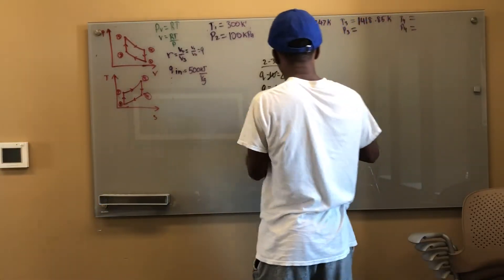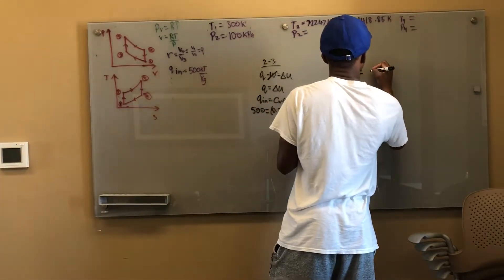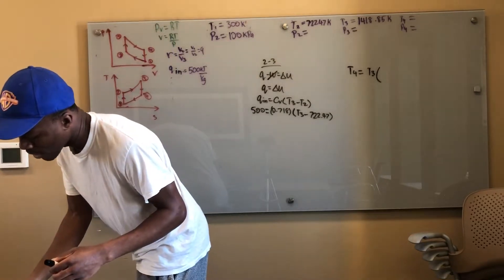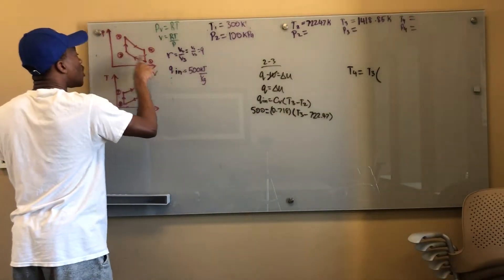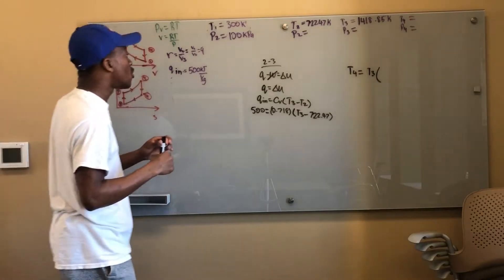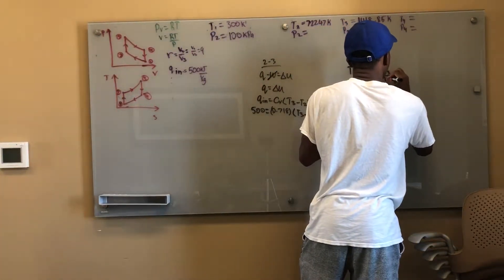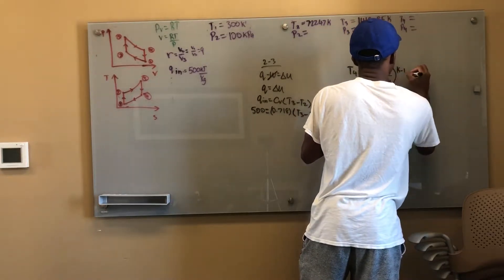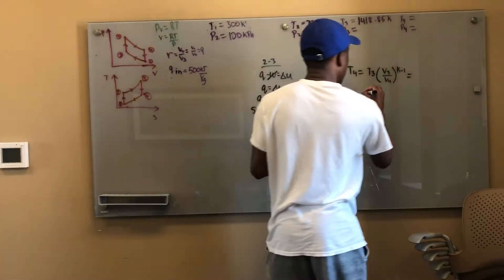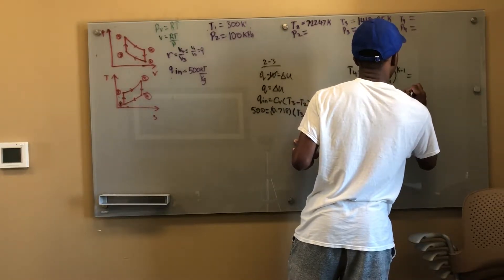Okay and because of that that allows me to solve for T4 using those same equations. T4 is going to be equal to T3 times V3 over V4. But what I want to point out here is that V1 over V2 is V4 over V3 because V1 is equal to V4 and V2 is equal to V3. So V1 over V2 is equal to V4 over V3. But they asked for V3 over V4 to the k minus 1, that's actually 1 over r. This is actually 1 over r.